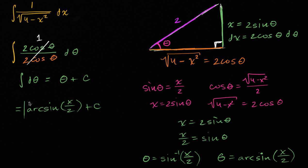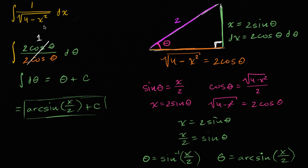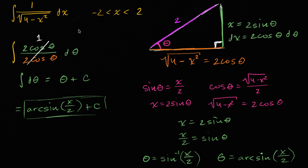We've evaluated that indefinite integral. Now let's dig into some interesting details. The domain of the original expression is restricted: x must be greater than negative two and less than two. If the absolute value of x equals two, you'd have zero in the denominator; if it's greater than two, you'd have a negative under the square root, which is undefined.